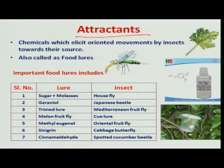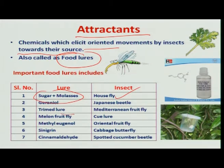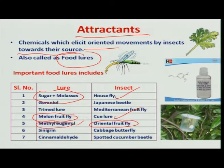An attractant is a chemical that brings oriented movement in insects towards the source of food; they are also called food lures. There are various attractants commercially available for the management of different insect pests. For the management of housefly, we have sugar and molasses. For melon fruit fly management, we have cue-lure. For the oriental fruit fly, methyl eugenol is much used in its management.